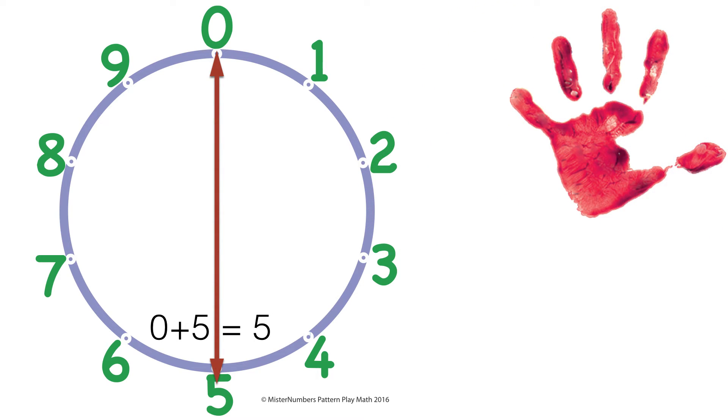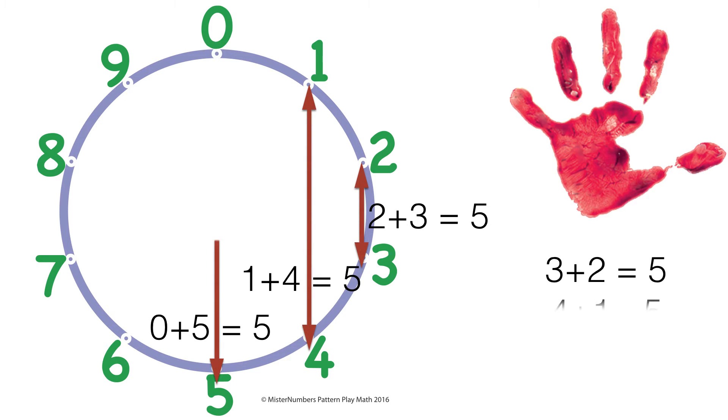On the right side are 1 and 4. They also add up to 5 and also go straight up and down. Only two numbers left on the right, 2 and 3, and they add up to 5 and make a straight up and down line too. And of course, 3 and 2 and 4 and 1 and 5 and 0 also add up to 5.